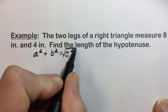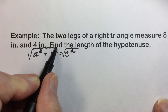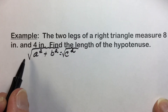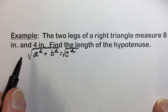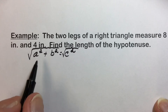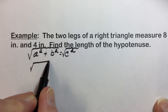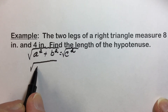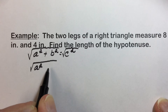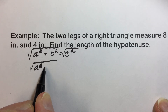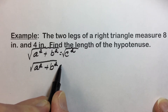Since the hypotenuse is squared, to undo the squaring we'll take the square root. Because we're after a length, we'll always only want the positive version of this result — the square root of A squared plus B squared.